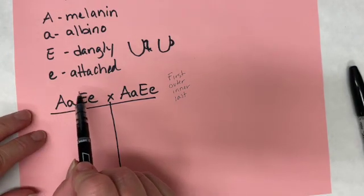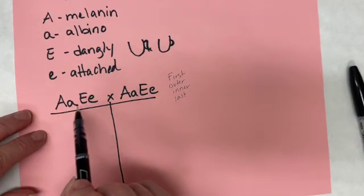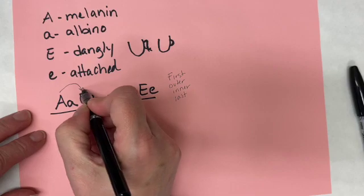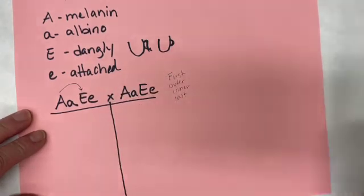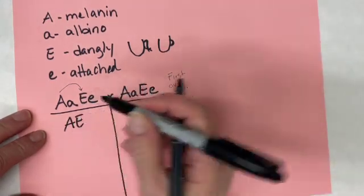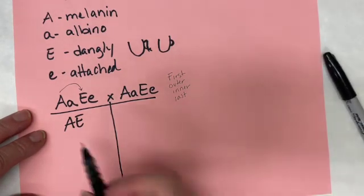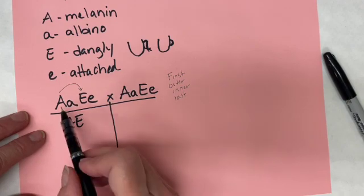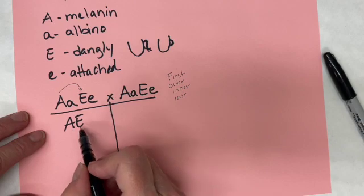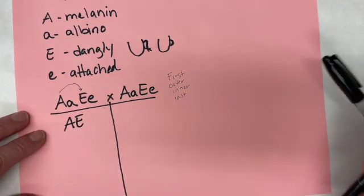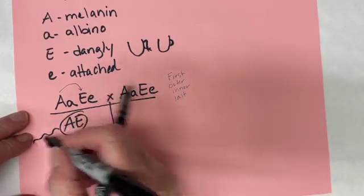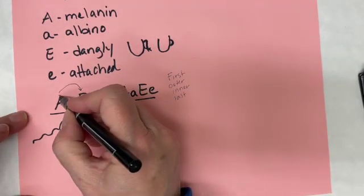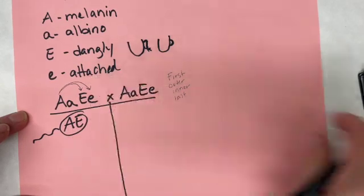So we would do FOIL here within this one individual. We take the first letter of the first gene and pair it up with the first letter of the second gene, and when you do that you would make the gamete big A big E. This gamete is haploid here, meaning it only has half of the amount of information. There's four alleles in this genotype, there's only two alleles that go into the gamete. And again this is a gamete, which is kind of fun to draw a little spermy tail. So the next one is outer, and so we're going to take the outer ones here and here and put those into a gamete which would be big A little e.